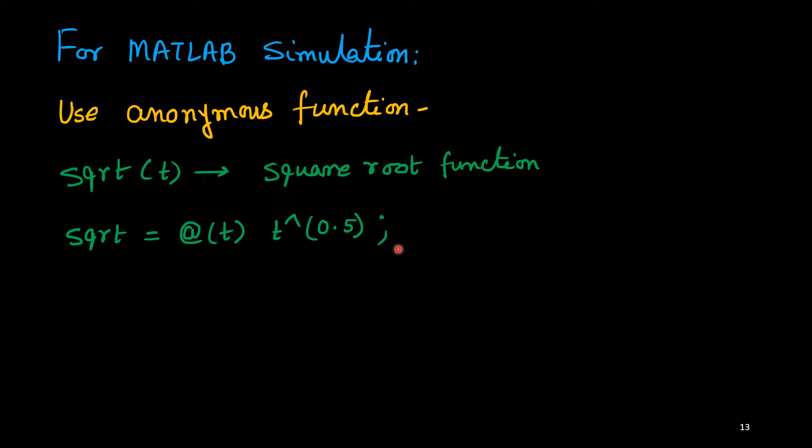So I can put any value of t, so t could be integer, could be any real number, any variable, or even we can consider vector also. So for example if I write square root of 4 obviously you will get 2. Now you see we are going to use this kind of anonymous function in our MATLAB.